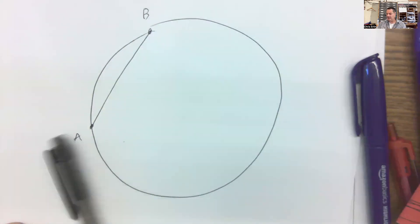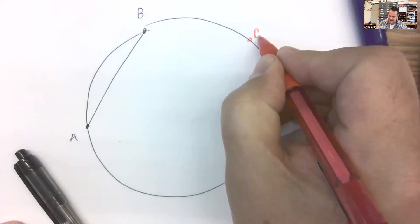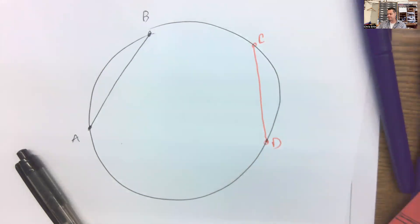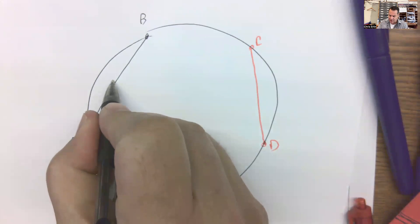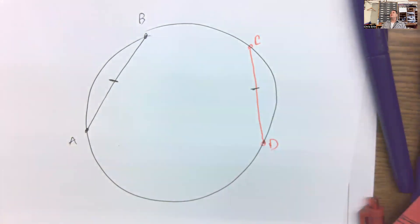It's a segment that has endpoints on the circle. So let's call this A, B. And then let's create another chord over here. We'll call it CD. If I tell you that these two chords are congruent, what else do we know?